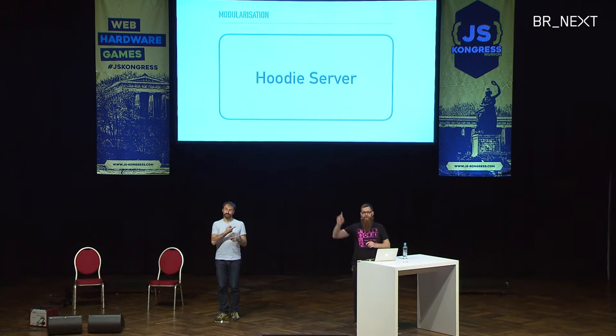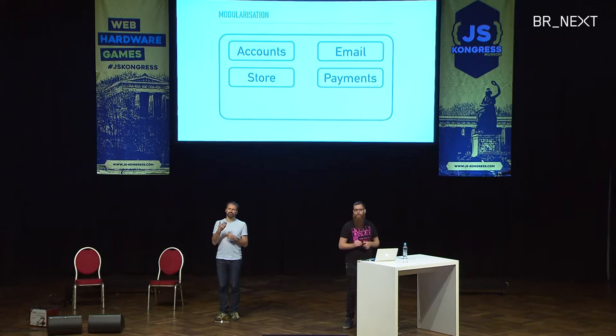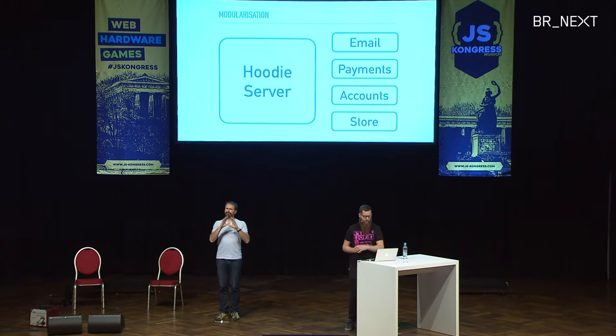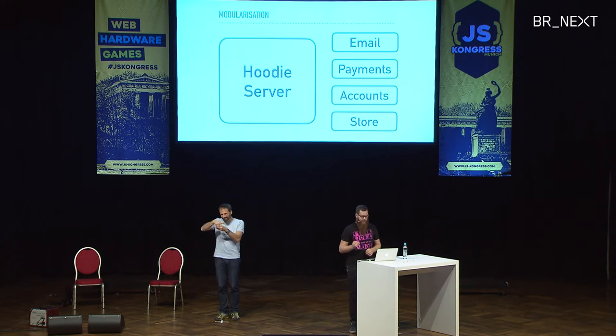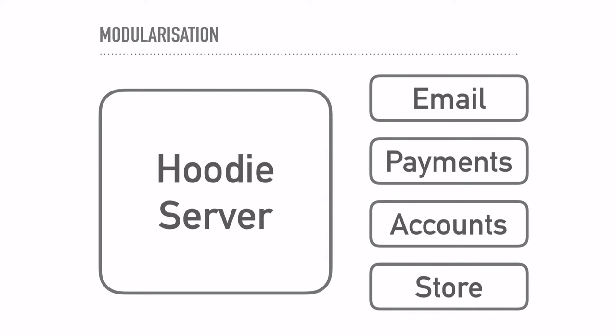When we started out, Hoodie server looked like one big monolith, and building a monolith is usually the right thing to do at first. Then we figured out there's actually a bunch of components in there: an accounts module for sign in and sign up, an email module, a payment gateway interface, and the offline store component. Eventually we moved those to distinct modules, and in reality today most of these are multiple modules themselves. Somebody contributing Password Forget for accounts only had to learn the internals of the accounts module and the API of the email module — nothing about the store, payments, or the overall architecture of Hoodie server.